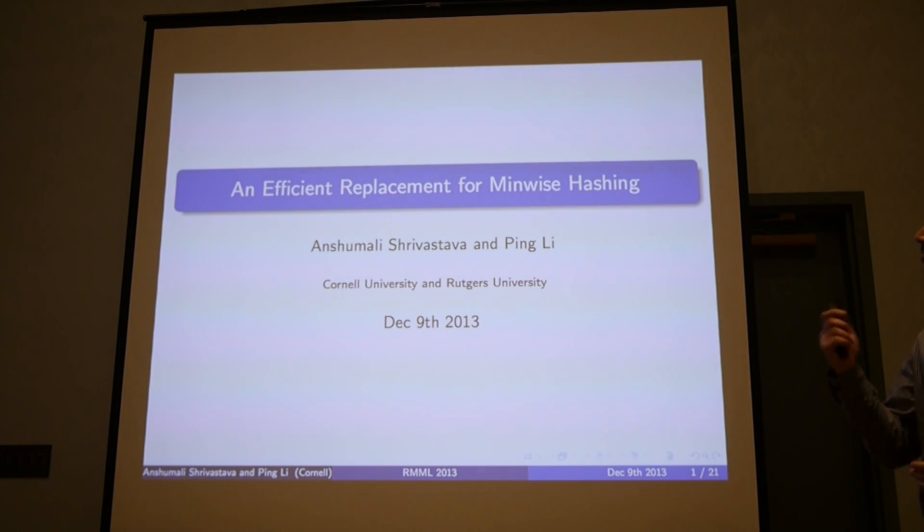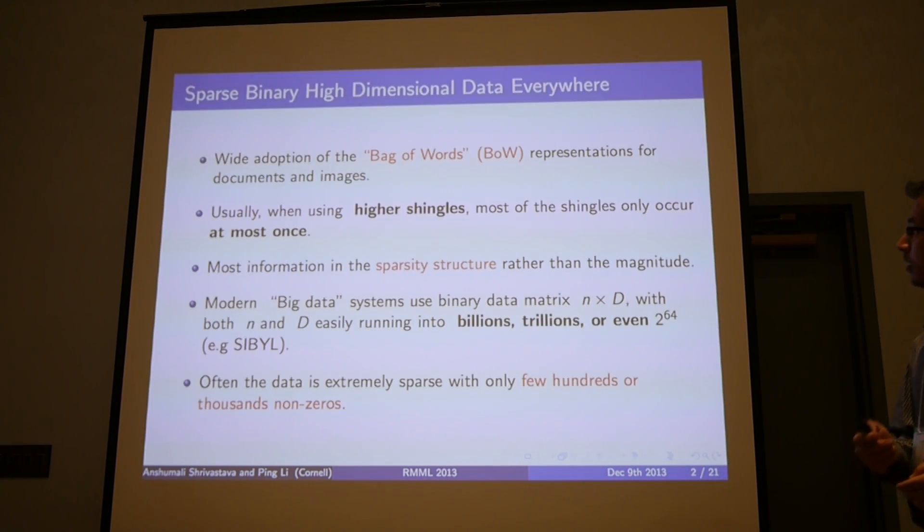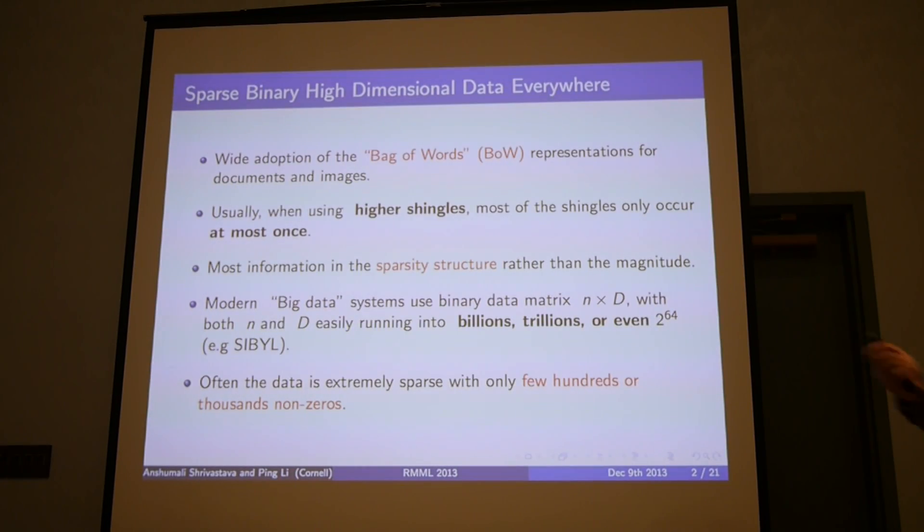I'll be talking about a smart replacement from minwise hashing in the context of near-neighbor search. The data that we are observing today over the web is typically very high dimensional and very sparse. The reason for it is the wide adoption of the bag of words technique, which takes the whole huge dictionary of space and thinks of documents as the elements contained in that set.